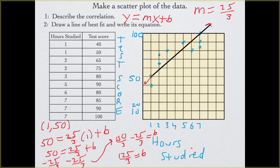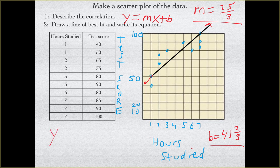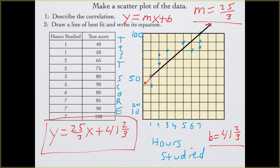Whenever we write the equation of a line from a scatter plot, we always use slope-intercept form. You must have y = mx + b for your trend line or line of best fit. So our equation is y = (25/3)x + 41⅔. There we have the equation of our trend line.